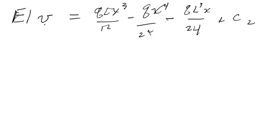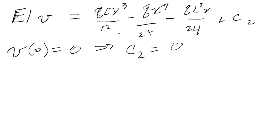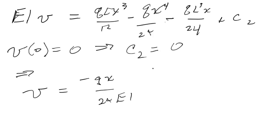We usually take as many zeros as we can to simplify things. We know v at x = 0 equals zero. Plugging that in, the left-hand side is zero, and everything on the right-hand side is also zero except C2, so C2 = 0. Therefore, v = minus qx over 24EI times (L³ minus 2Lx² plus x³).